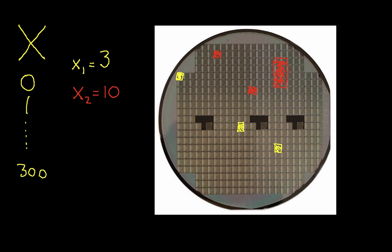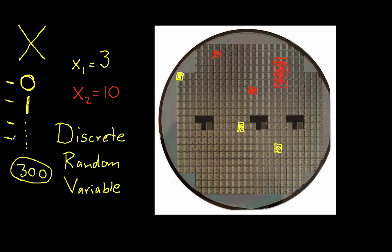The fact that the values that this random variable can take have to be integers, they have to actually be positive integers, I can't have negative 3 defective die, and these integers have to be between zero and whatever the largest number of die possible on the wafer is. This is a discrete random variable. Again, it's discrete because it has a discrete number or discrete set of values that it can take.